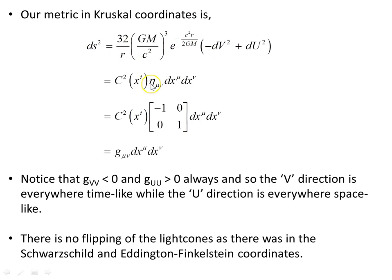The metric in Kruskal coordinates is G_μν = C²(ξ) η_μν, the conformal scaling factor times the flat-space Minkowski metric. The G_VV component is negative everywhere and G_UU is positive everywhere, so the V direction is everywhere time-like and the U direction is everywhere space-like. This gives the light cone orientation with no flipping of light cones, unlike in Schwarzschild and Eddington-Finkelstein coordinates.